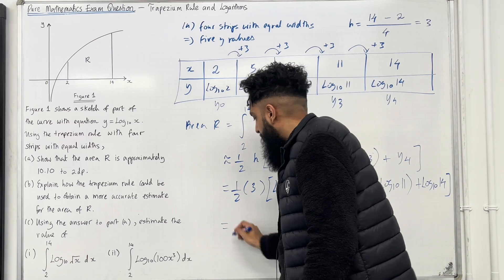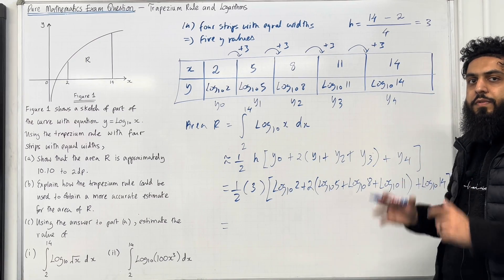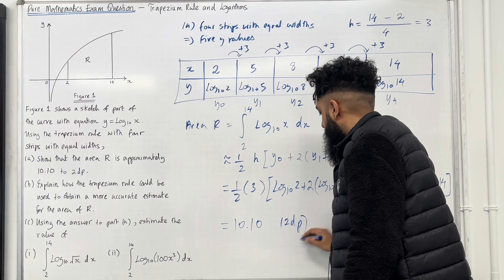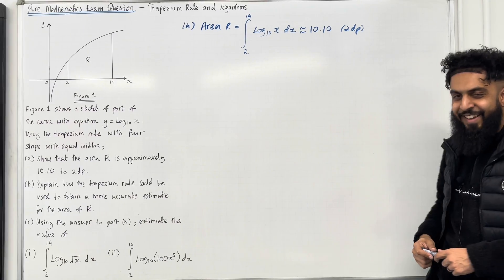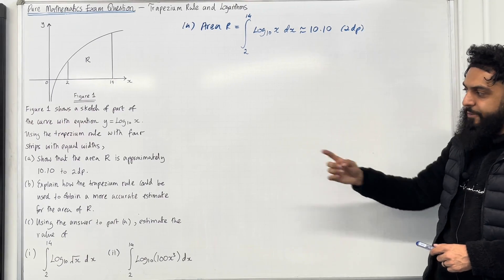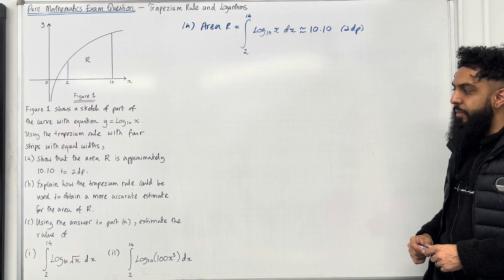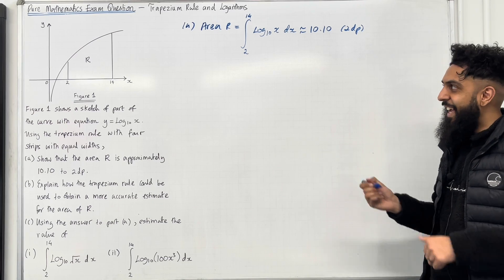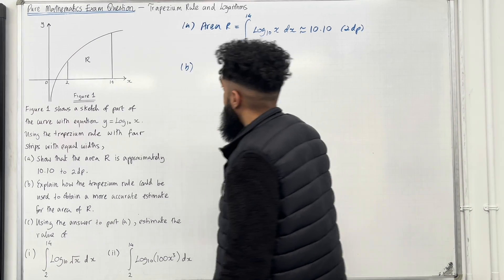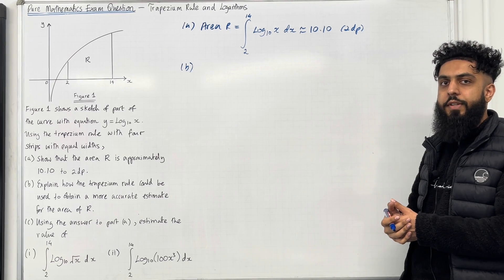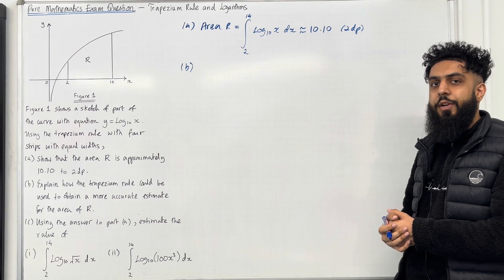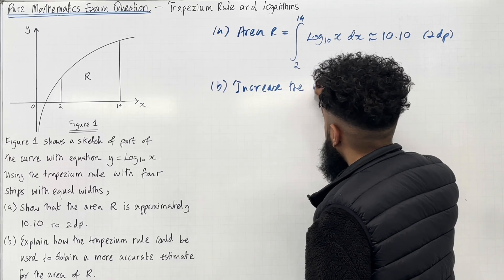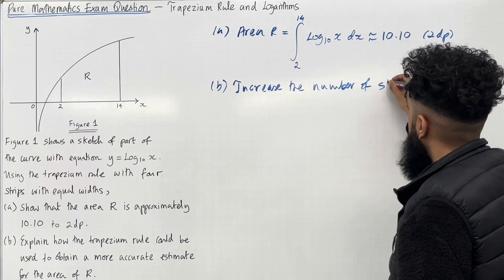Putting this into my calculator and rounding to two decimal places, I get exactly 10.10 to 2 d.p. That completes part A of this exam question. Moving on to part B: explain how the trapezium rule could be used to obtain a more accurate estimate for the area R. The answer to part B is to increase the number of strips.